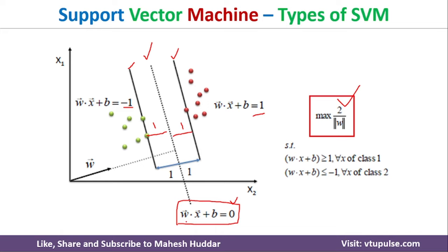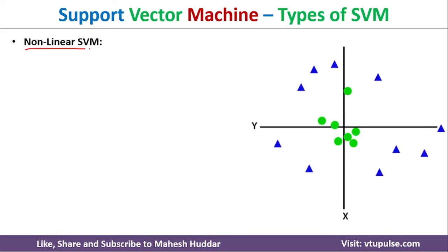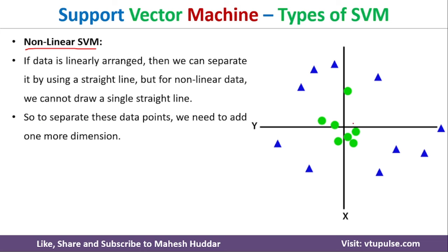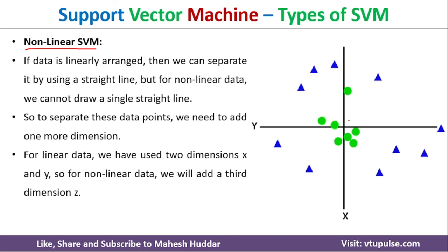The next type is non-linear SVM, where we cannot draw a straight line to divide the data into classes. If no straight line can separate the data, we need to convert it into linear data using a mapping function. For example, using the mapping function z = x² + y², we can transform the data points.